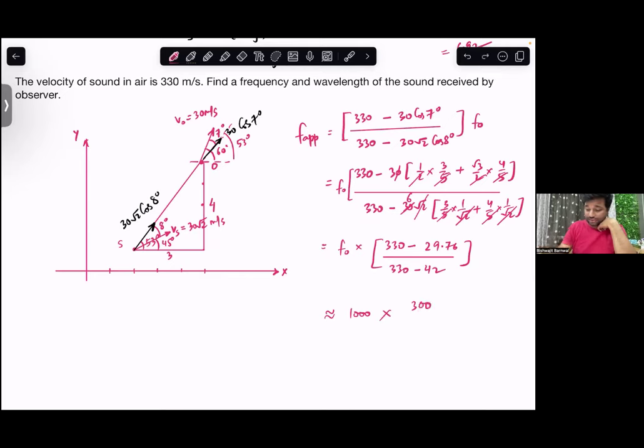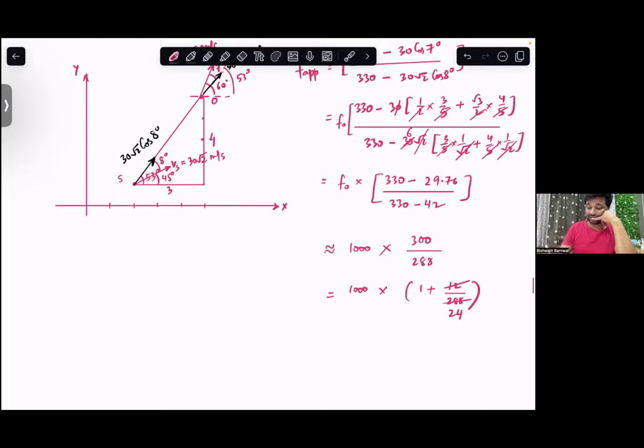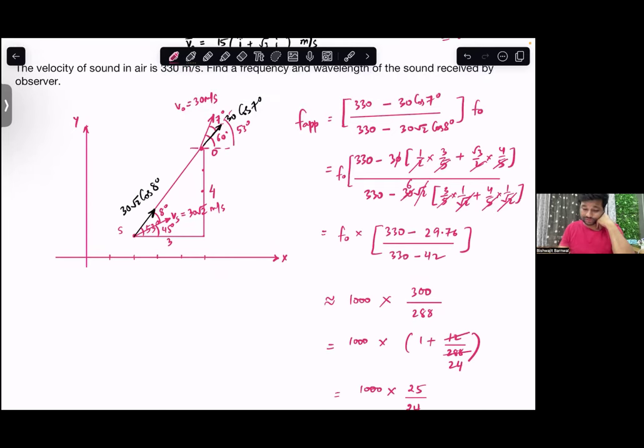We will simplify it. We will take 1000, we will take 300, and 1 plus 12 by 288. We will take 12, 24, so this will be 1000 into 25 by 24. This is the value, so this will be 1041.67.